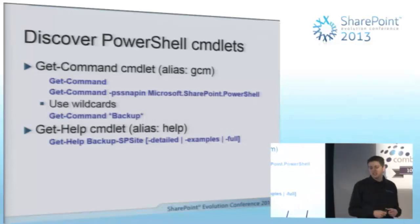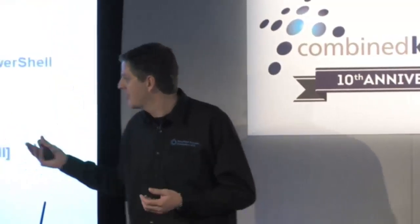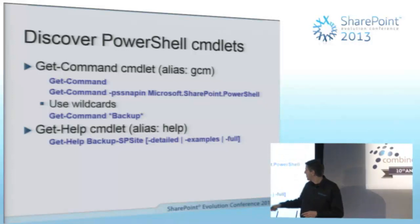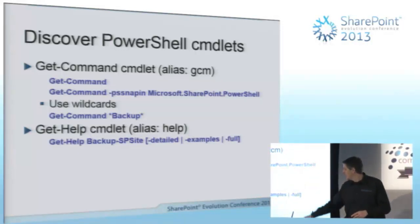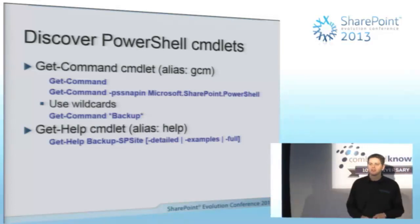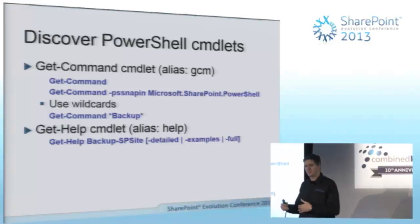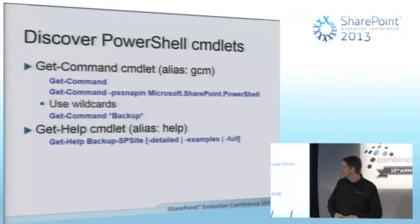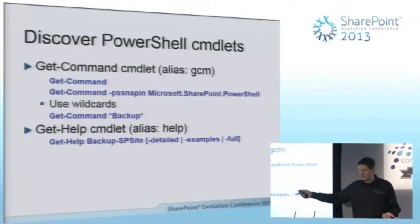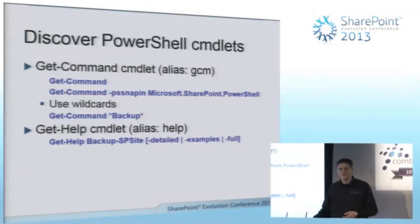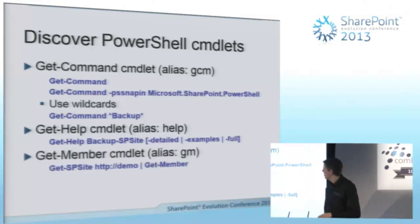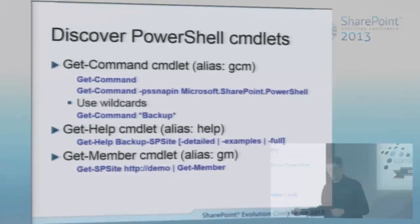Once you've found your cmdlet, use Get-Help to figure out how to use it — aliased as just 'help'. For example, Get-Help Backup-SPSite. You can pass in parameters: Detailed, Examples, or Full. If you omit those, you get a short synopsis, syntax, available parameters, and description — but no details about specific parameters and no examples. If you're trying to figure out how to use a cmdlet, just add -Full. This gives you everything: related cmdlets, examples, and full parameter descriptions.